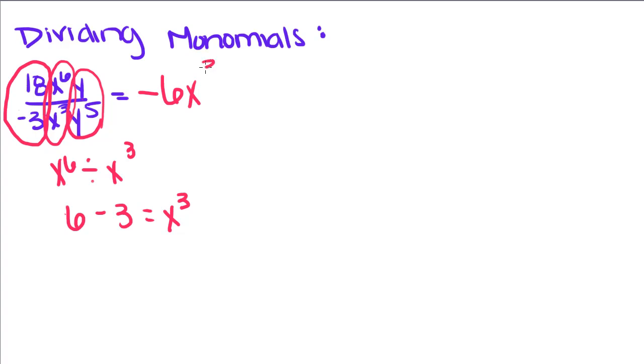So negative 6, x to the 3rd, and we're going to do the same thing. y to the 1st divided by y to the 5th is going to be 1 minus 5, so negative 4. In order to show that that 4 is negative, it's going to stay on the bottom. So it's going to be negative 6, x cubed over y to the 4th.